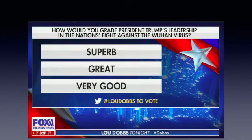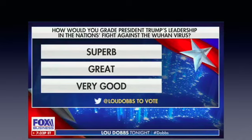Here's another example that sweeps the trifecta of errors. A Lou Dobbs Tonight Twitter poll asked: 'How would you grade President Trump's leadership in the nation's fight against the Wuhan virus?' — a clearly partisan-biased question — with response categories of 'superb,' 'great,' and 'very good,' with no option for anything negative. It has sampling bias (only Twitter users likely to watch Lou Dobbs), a horribly loaded question, and response categories that don't cover the full domain. It illustrates how a pollster who wants to can get whatever answer they're looking for.